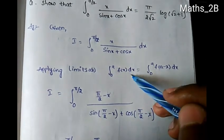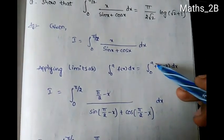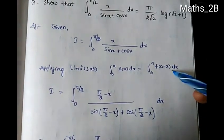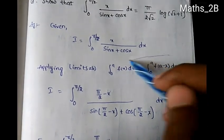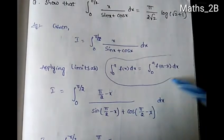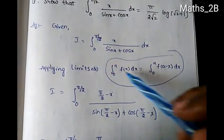We will use the formula: integration from 0 to a of f(x) dx equals integration from 0 to a of f(a minus x) dx. This is the formula.